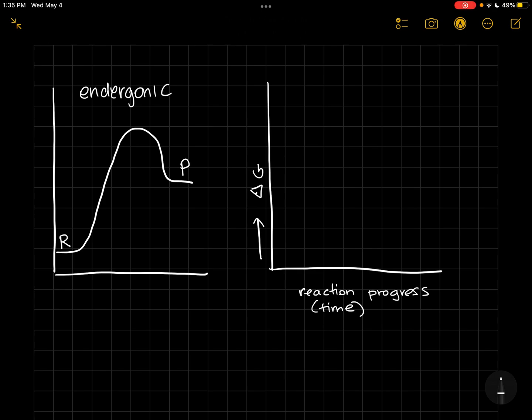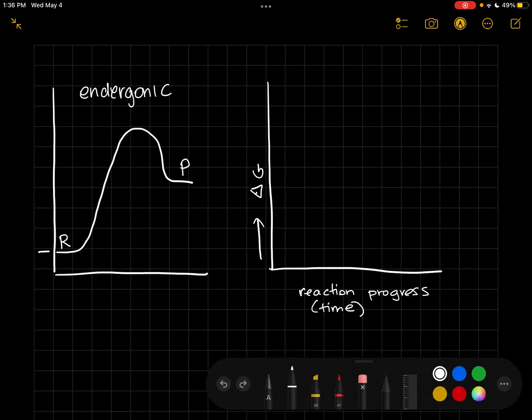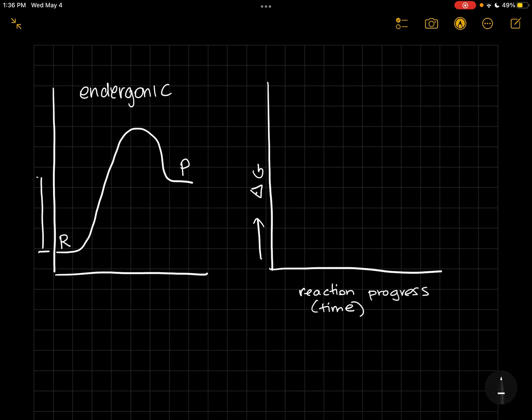So our change in delta G is there and you can see that we're using delta G. So we're stealing Gibbs free energy from the universe.